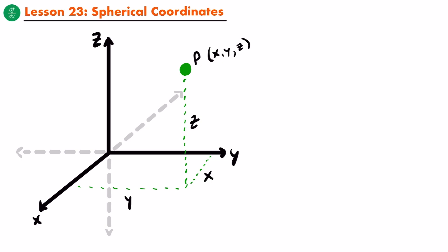If we were going to use the cylindrical coordinate system, we would represent our point with a radius R, an angle theta, and a Z coordinate. The Z coordinate remains the same, but R and theta are going to be different coordinates. R, the radius, represents the distance from the origin to the shadow point of that point in 3D space. Theta is the angle of the radius from the positive X axis — the angle from the positive X axis to the line for the radius R. By measuring that angle and the distance from the origin to the shadow point, you could then use the Z coordinate to plot that point.